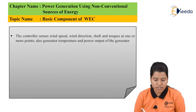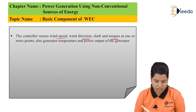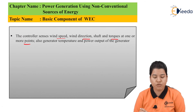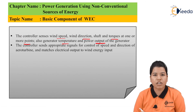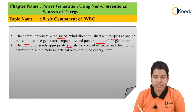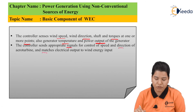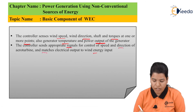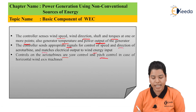The main function of the controller is to sense the speed of the wind, then wind direction, shaft and torques at one or more points. Also, the generator temperature and the power output of the generator are sensed by the controller. The controller will send the appropriate signal for the control of the speed and direction of the aero turbine, then it will match the electrical input to the wind energy input. Controls on the aero turbine are the yaw control and the pitch control in case of horizontal wind axis machines.